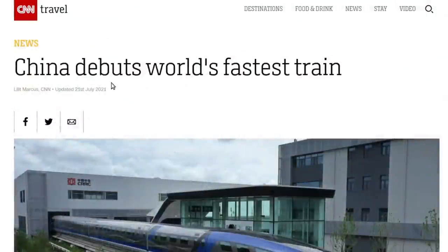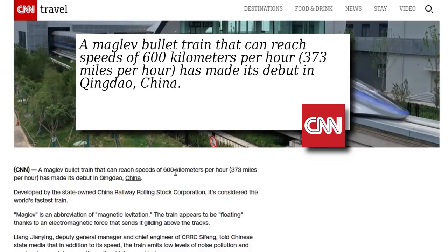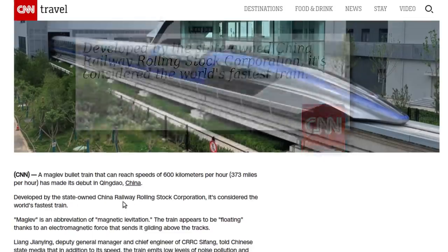From CNN, China debuts world's fastest train, a maglev bullet train that can reach speeds of 600 kilometers per hour or 373 miles per hour has made its debut in Qingdao, China. Developed by the state-owned China Railway Rolling Stock Corporation, it's considered the world's fastest train.